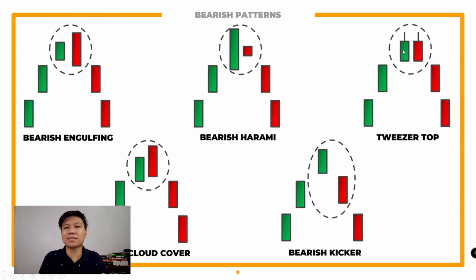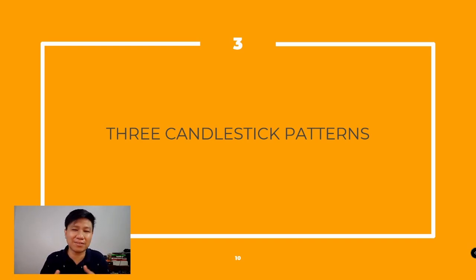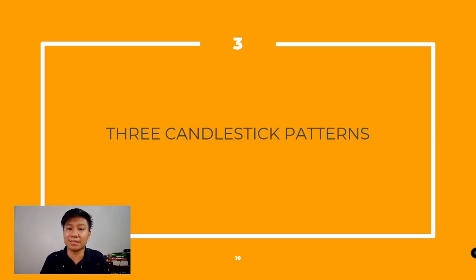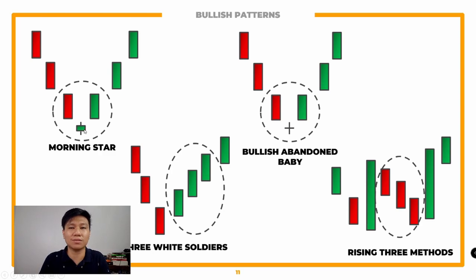Yan yung mga patterns natin for two candlesticks. Now meron din tayong mga three-candlestick patterns. If you'll notice, parang meron laging counterpart yan between the bullish and bearish patterns — you just need to identify and understand each one kung paano mo siya ititrade. So here we have four common patterns: morning star, abandoned baby, three white soldiers, and rising three. For the morning star and abandoned baby, these involve doji candlesticks.